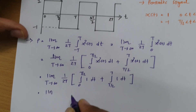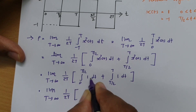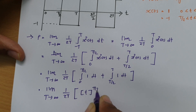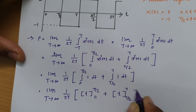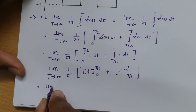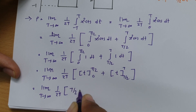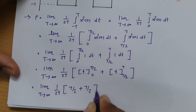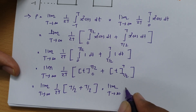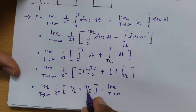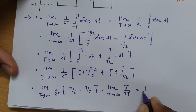Evaluating: limit as T→∞ of (1/2T) × [t from 0 to T/2 + t from T/2 to T] = (1/2T) × [(T/2 − 0) + (T − T/2)] = (1/2T) × [T/2 + T/2] = (1/2T) × T = 1/2. So the power is 1/2.